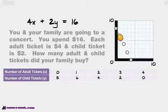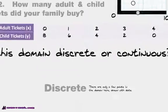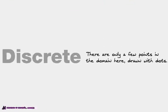Why is that? Why couldn't I put a line all the way through? Well, for starters, this is a discrete domain. It's a discrete domain. There are only a few points in the domain here drawn with dots.